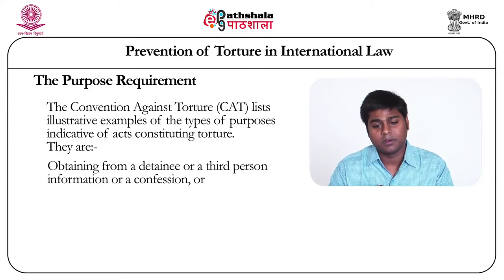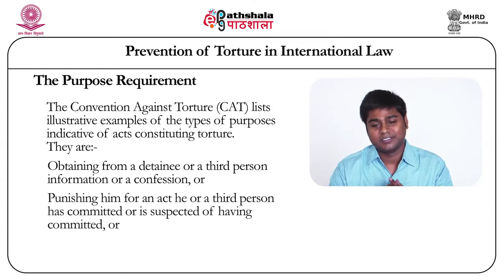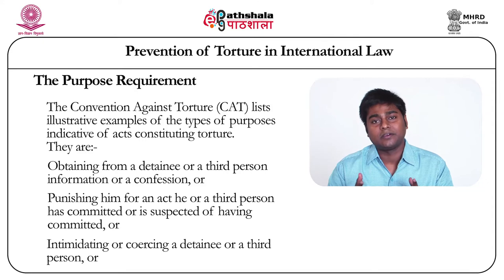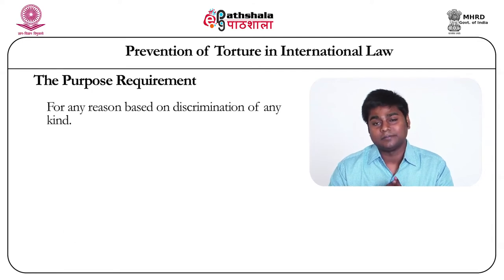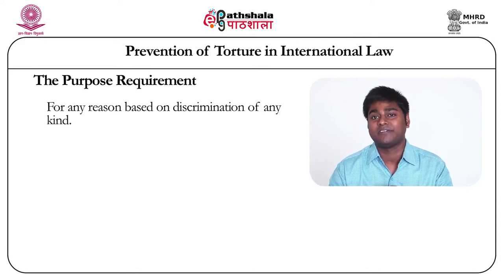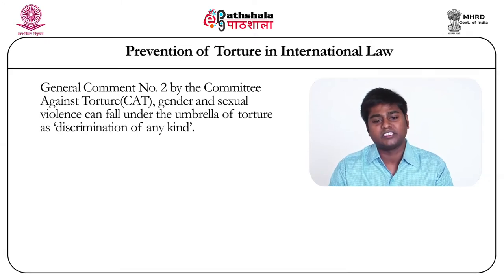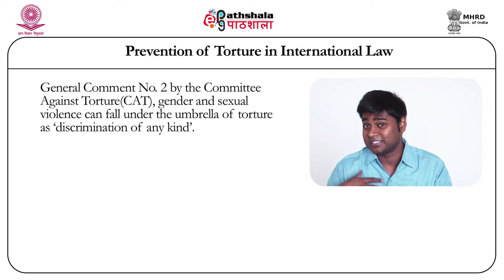International courts have used the fourth purpose — for any reason based on discrimination of any kind — to bring in different purposes not explicitly mentioned under the convention. The Committee Against Torture's General Comment Number 2 says that gender and sexual violence can fall under the umbrella of torture as discrimination of any kind. So gender and sexual violence, if committed with intent to cause injury, can be brought under the purview of torture.